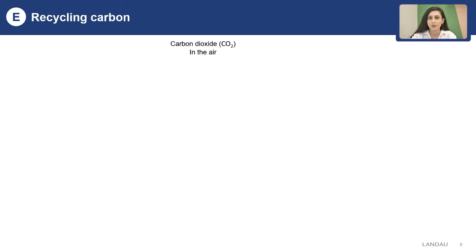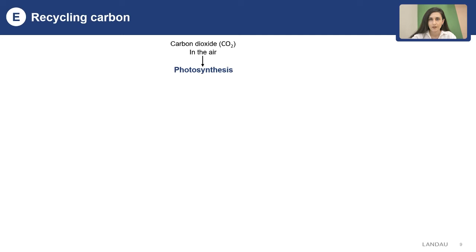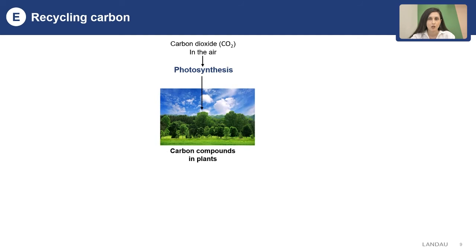Let's see the recycling of carbon. There are several processes involved which bring carbon dioxide into the cycle and which release carbon dioxide back into the atmosphere. Carbon dioxide is a gas found in the air and it is used in the process of photosynthesis. Plants absorb carbon dioxide and use it in photosynthesis, and now carbon is found in the compounds within the plants.